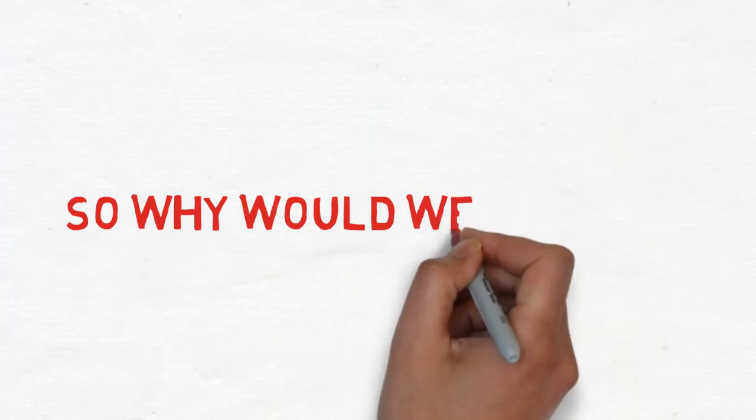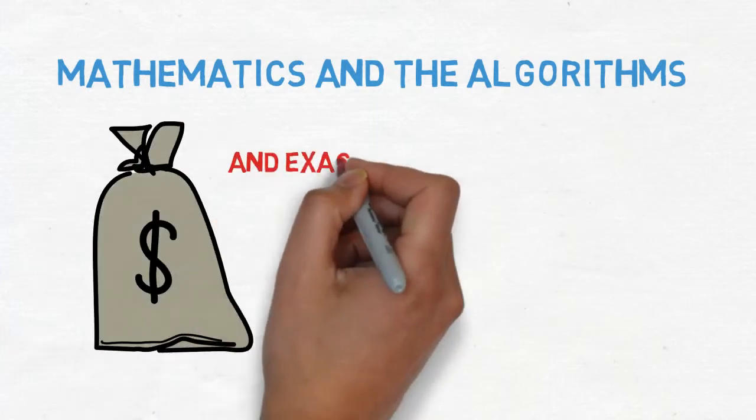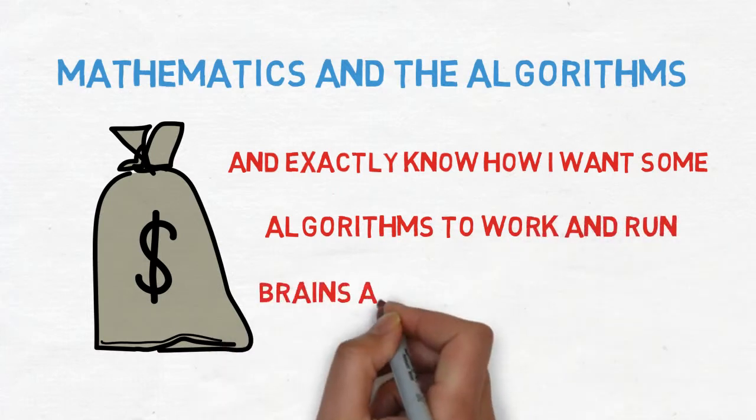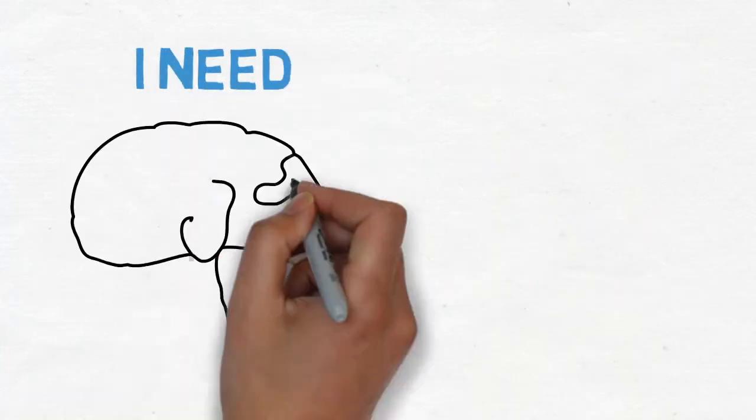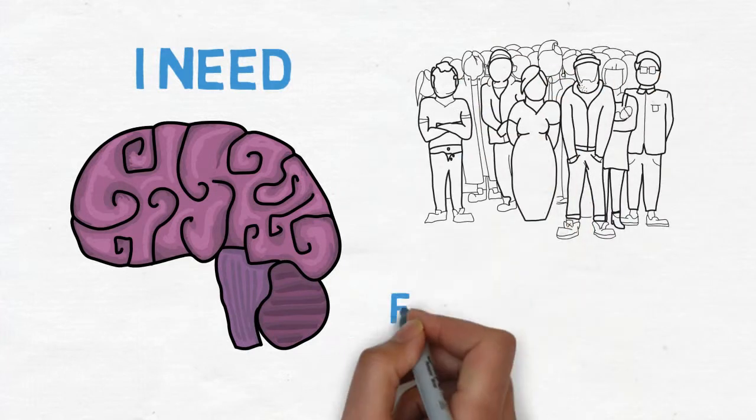So why would we do that? I'm also involved indirectly in the mathematics and algorithms behind the fund. And for me to be smart and exactly know what I want to do with those algorithms and how I want them to work and run, I have my own brains and IP on that. But I also need other things than my brain. I need other people. I need fresh thinking on that.